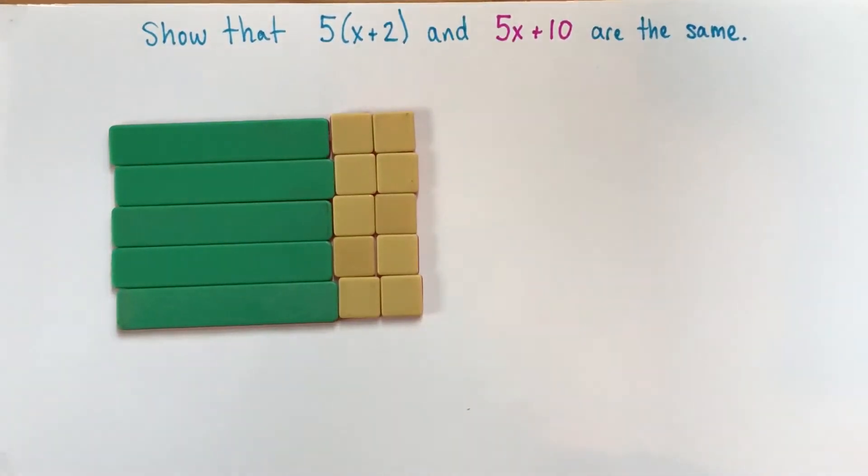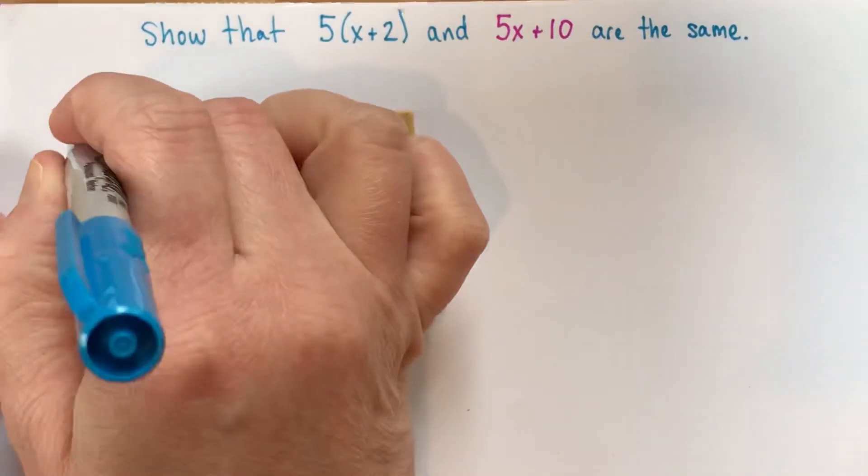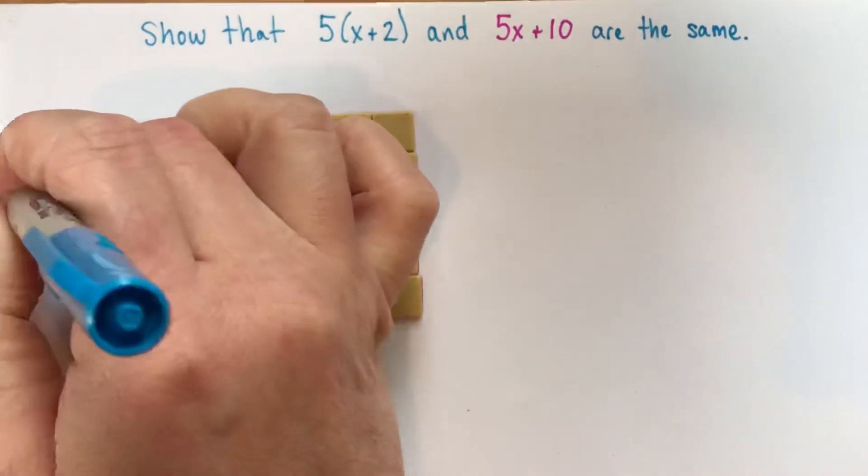So in my picture here, I'm going to label why this is 5 times x plus 2. So this, we have 5 rows,